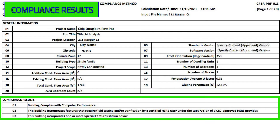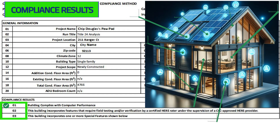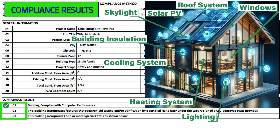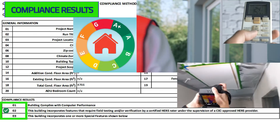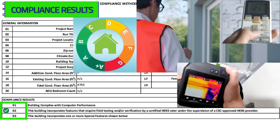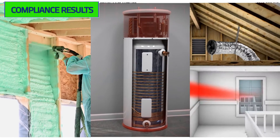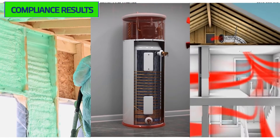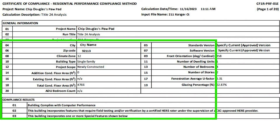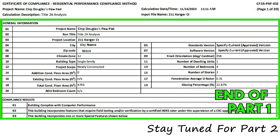The compliance results section of the energy document outlines three outcomes. It confirms that your building's design complies with the performance standards set out by the energy code. It also indicates whether your building includes features that require field testing or verification by a home energy rating system. And it notes if your building incorporates any special features that go beyond the basic requirements. Detailed tables later in the document will provide specifics of the HERS testing and special features that the project includes.